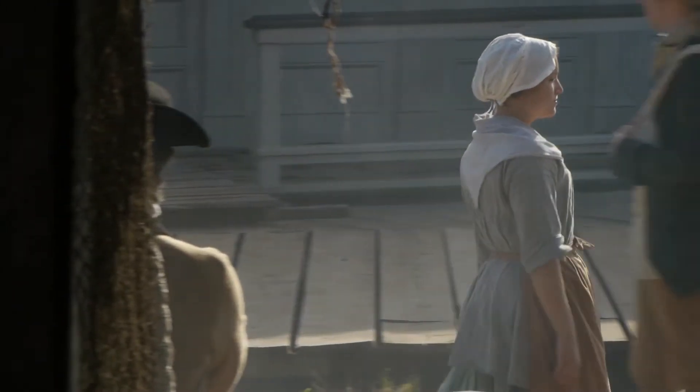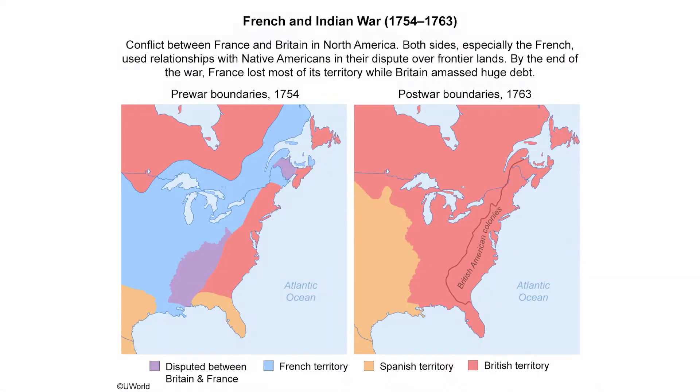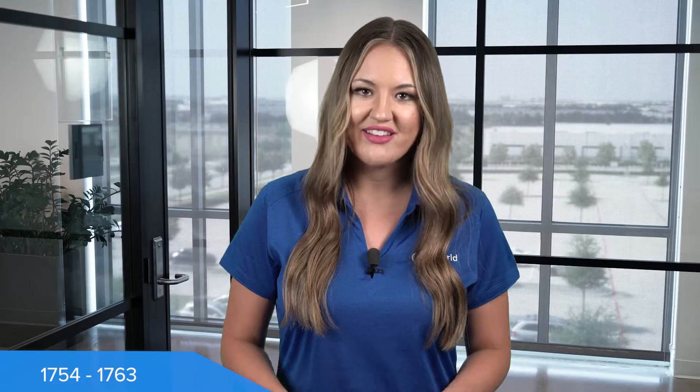We'll start our road to the Revolution in the colonies at the French and Indian War that occurred from 1754 to 1763. This war was a North American conflict over land between France and Britain. Both sides, but especially the French, relied on their relationships with Native Americans throughout the entire war. France ended up losing and gave up most of its land in North America to Britain. But Britain didn't leave unscathed because they went into debt due to the war.